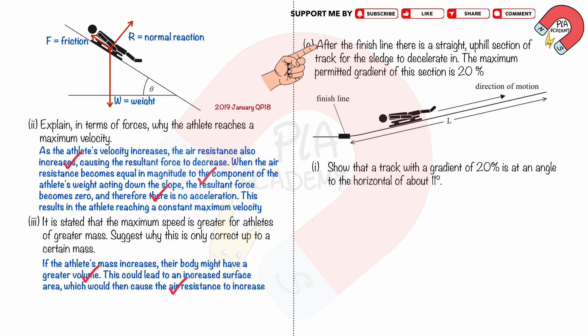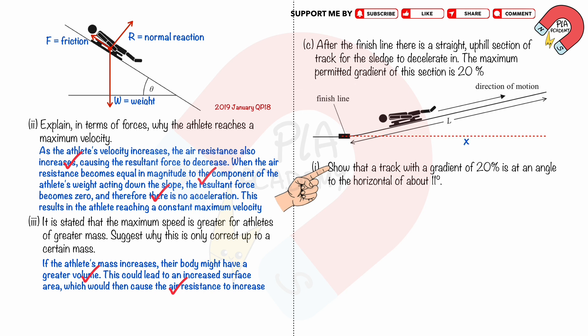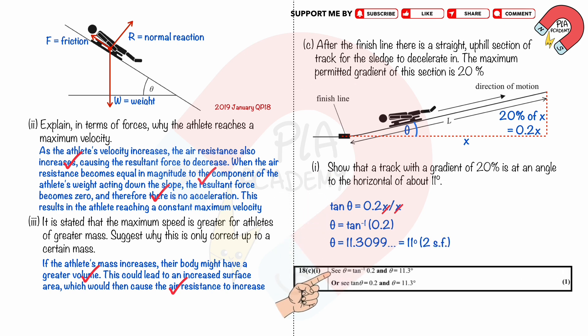Part c1: After the finish line there is a straight uphill section of track for the sledge to decelerate. The maximum permitted gradient is 20%. Show that a track with a gradient of 20% is at an angle to the horizontal of about 11°. Let the horizontal distance be x; then the vertical height is 20% of x, which is 0.2x. So tanθ = 0.2x/x = 0.2, and x cancels out, giving θ = 11° (2 significant figures). You get 1 mark for the correct answer.